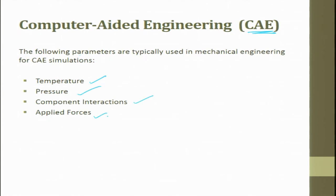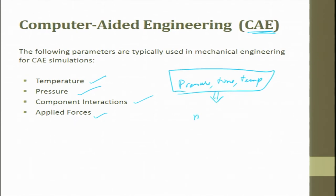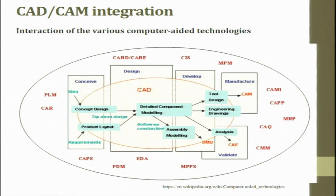Looking at the interaction of various computer-aided technologies, PLM (Product Lifecycle Management) is the overall umbrella. Within CAD you have conceptual design, product layout, detail component modeling, assembly modeling, analysis, engineering drawing, and tooling. Tooling comes under CAM, and analysis goes to CAE. Other elements include coordinate measuring machine, computer aided quality, manufacturing resource planning, computer aided process planning, computer aided manufacturing, and inspection.